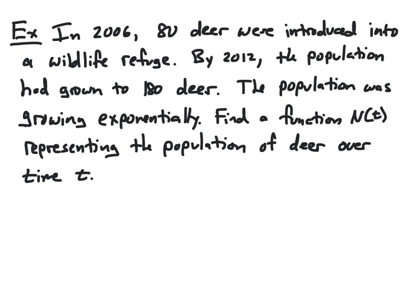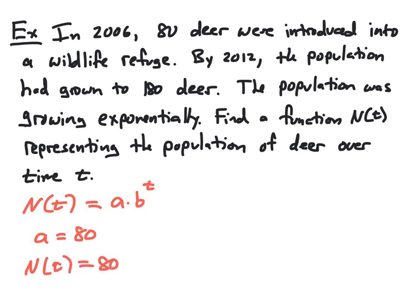In this example, we're told that in 2006, 80 deer were introduced into a wildlife refuge. By 2012, the population had grown to 180 deer, and the population was growing exponentially. We're asked to find a function n(t) representing the population of deer over time t, of the form a·b^t. Since the deer were introduced in 2006, the initial value a is 80, so n(t) = 80·b^t.